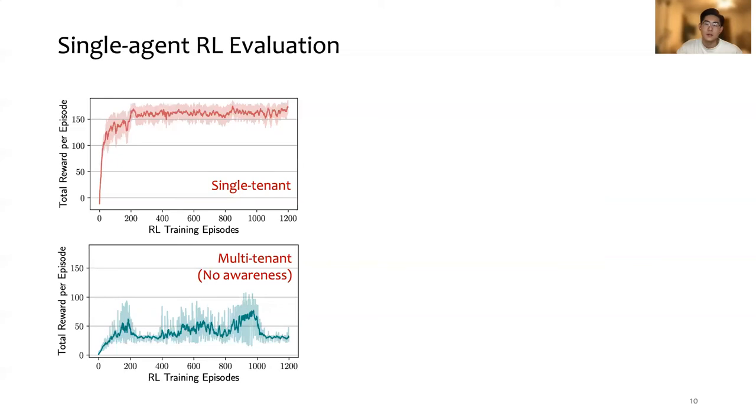However, compared to the learning curve of the single-agent RL training in single-tenant, the bottom one has lower reward with higher variance. Most importantly, it doesn't converge in a stable manner.